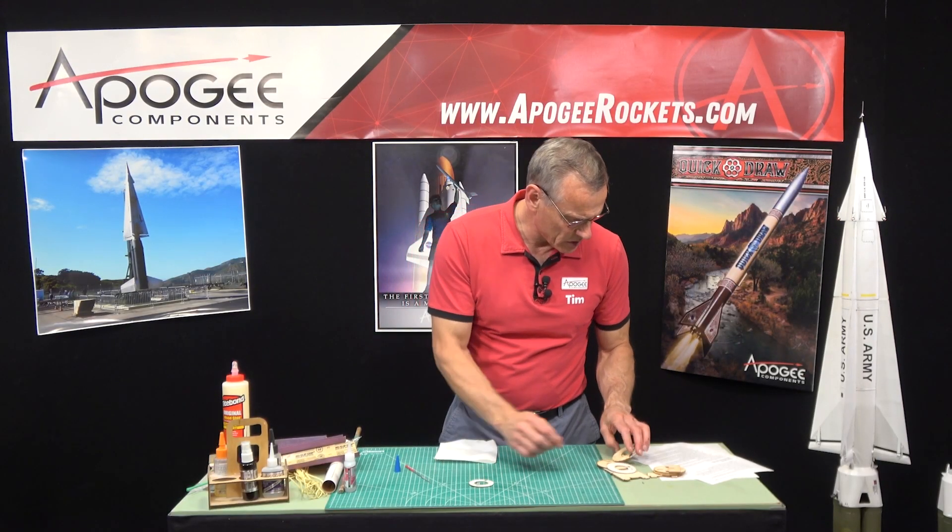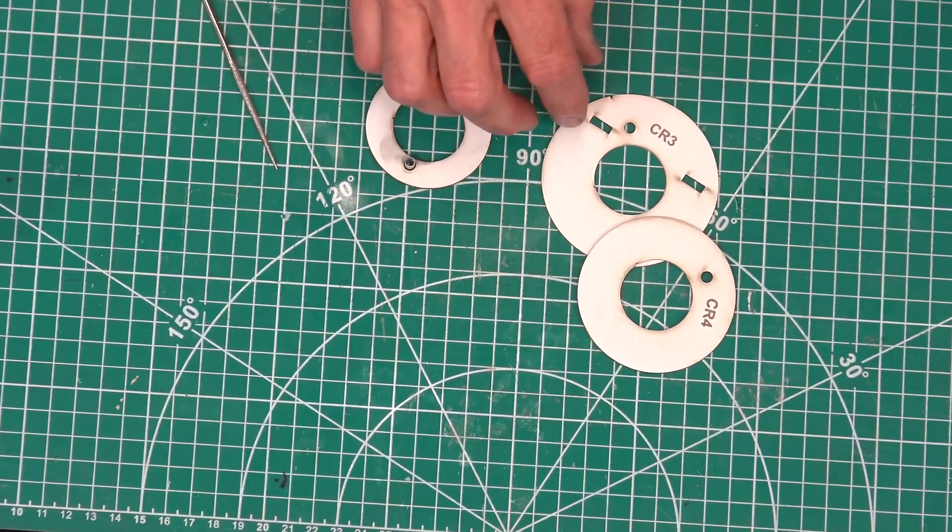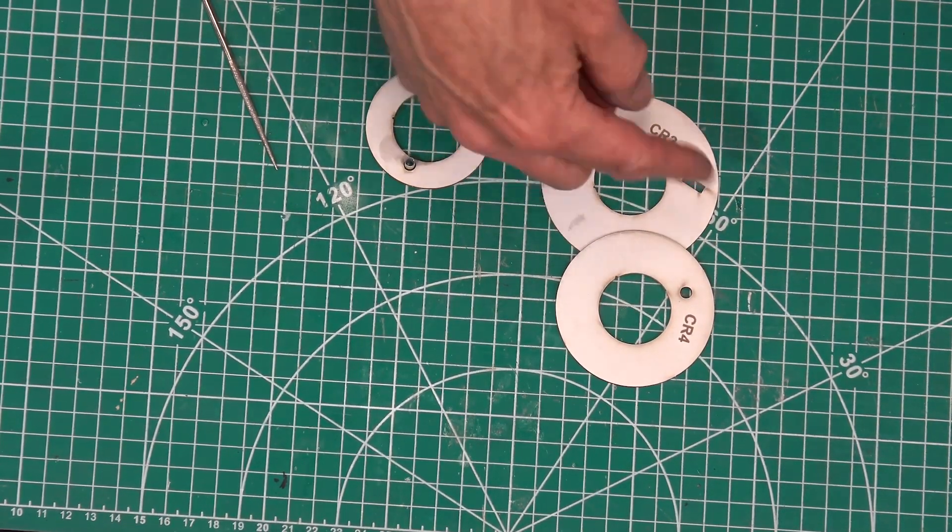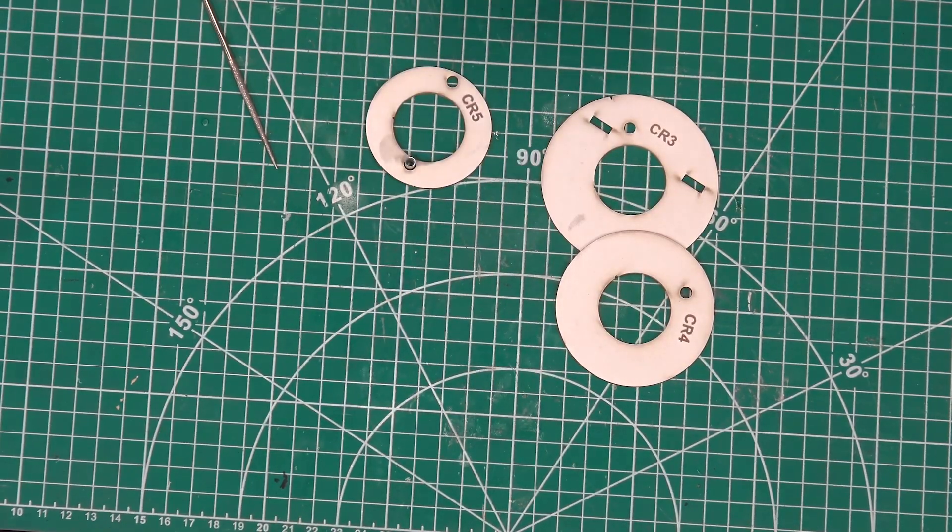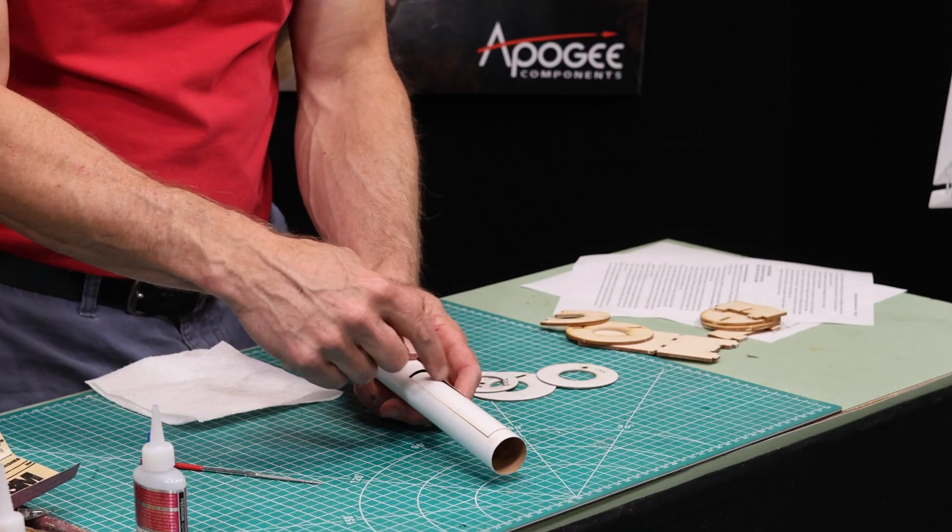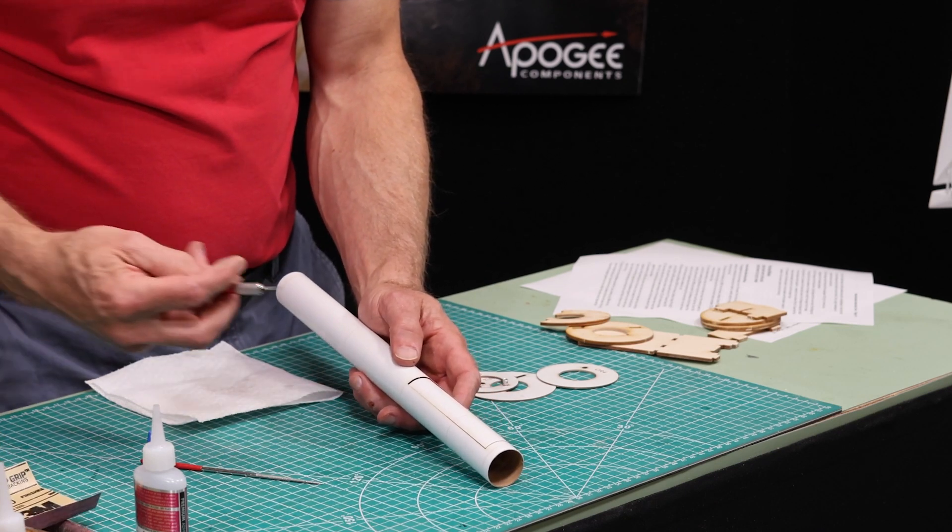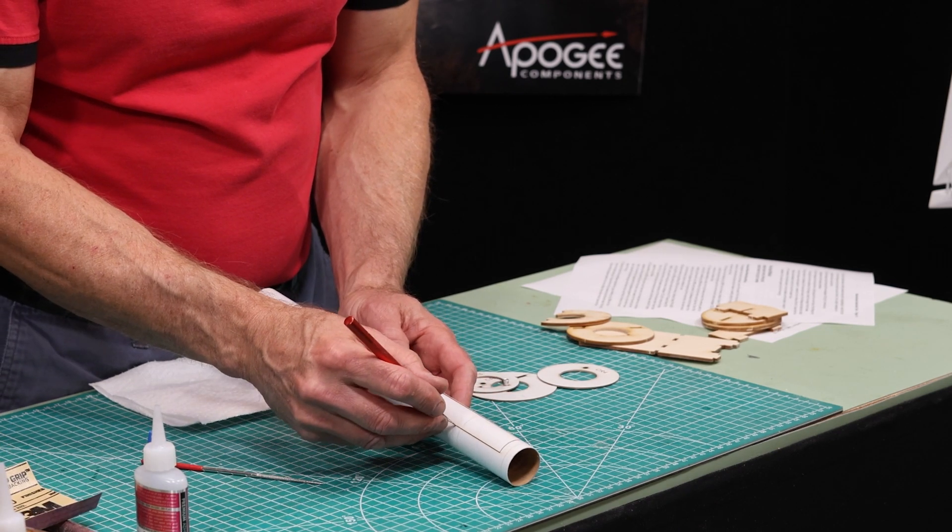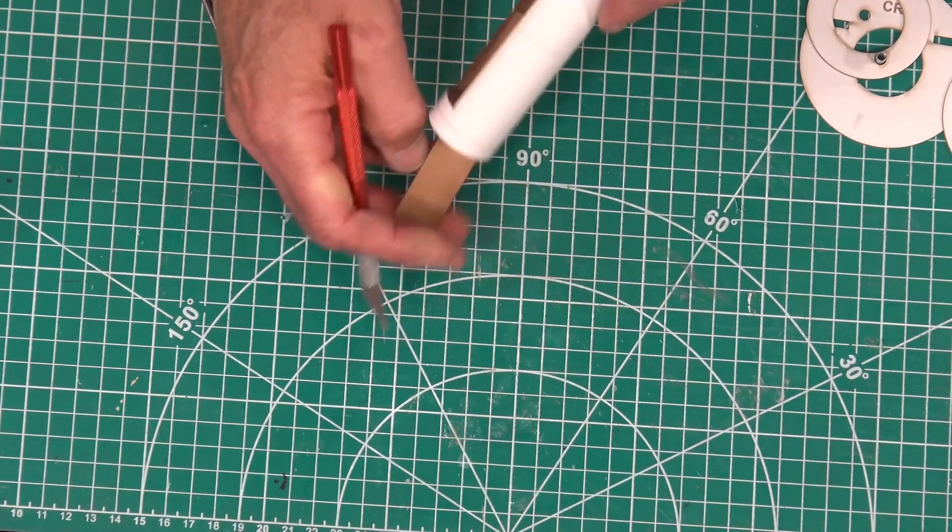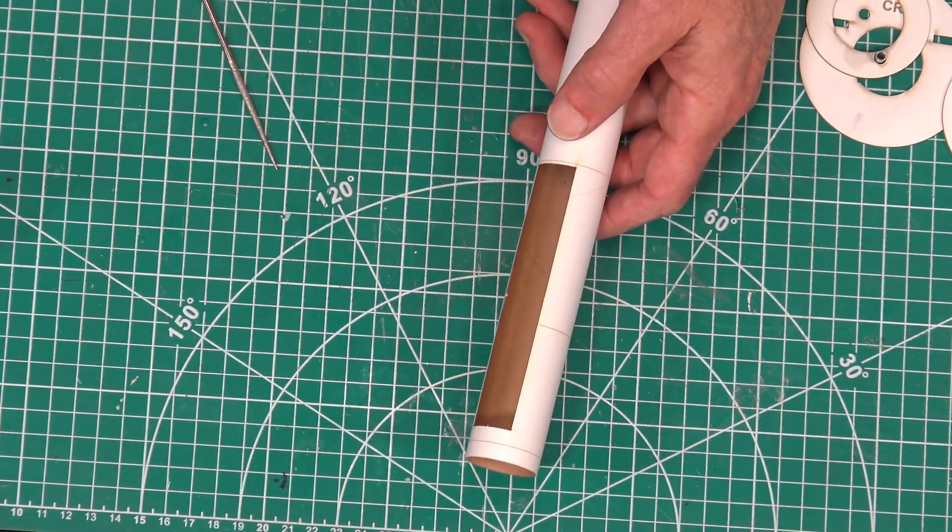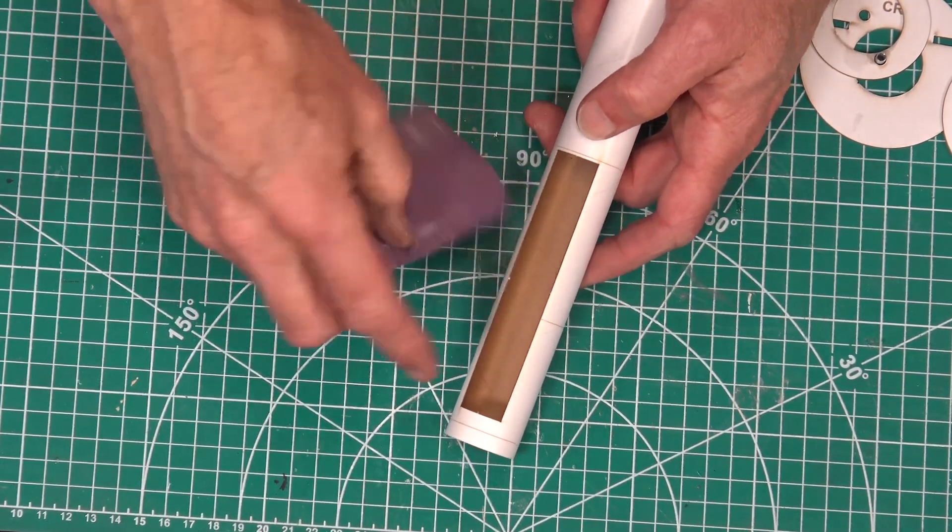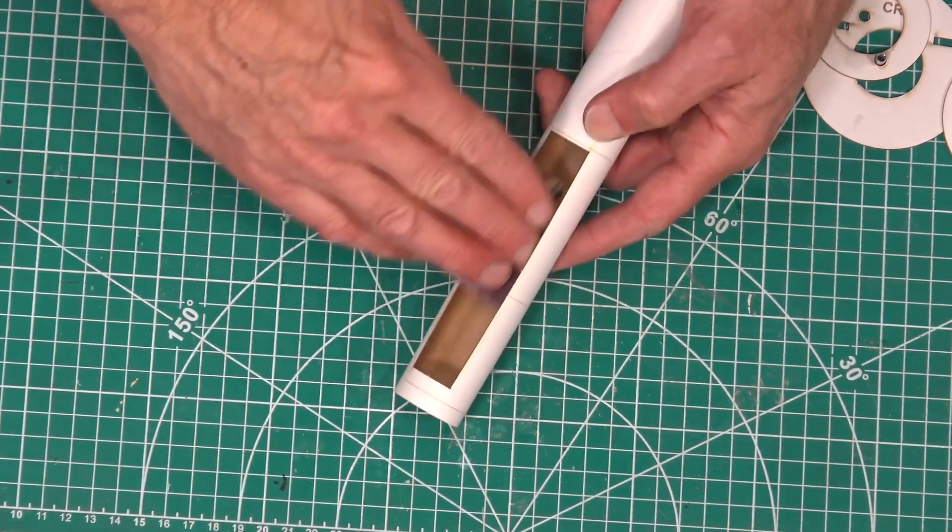Step 88 is to remove CR3 and 4 from the cardstock which I've already done. Sand as necessary. Step 89 is we're going to take the motor tube and we're going to remove this rectangle from the inside. Cut those little tabs, discard that piece, and then sand off those little tabs.